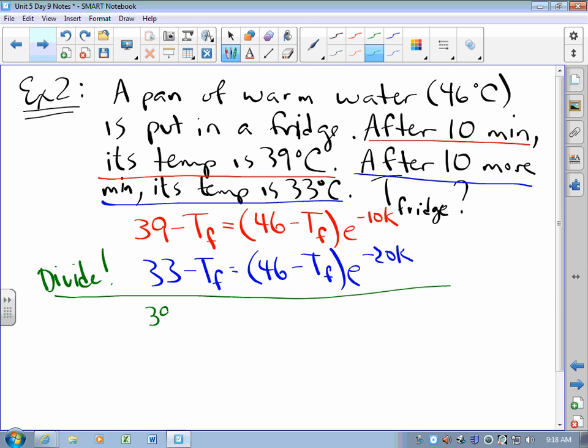If we divide, we get (39 - T_F)/(33 - T_F) = (46 - T_F)/(33 - T_F), the e terms cancel by laws of exponents. Well, I have a crazy thought. How do I get e^(10K) by itself? I can go back up to the first equation and solve for e^(10K). I can bring e^(10K) up on the left side and bring 39 - T_F down on the right side and get (46 - T_F)/(39 - T_F).